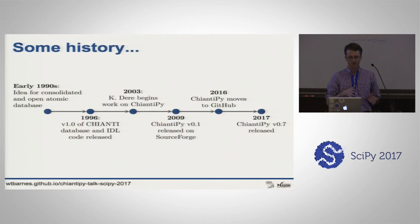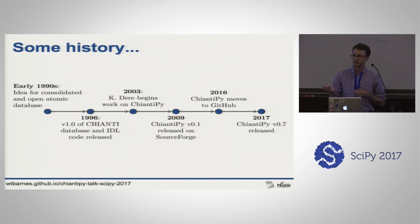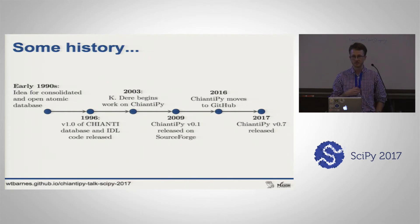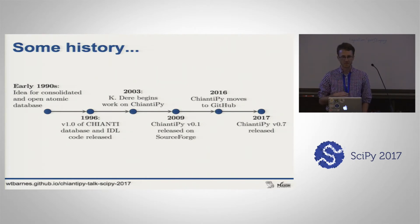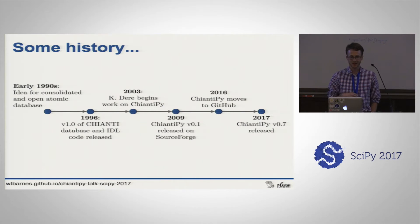In the early 1990s they started consolidating these databases. The first version was released in 1996 along with IDL code. Around 2003, Ken began working on ChiantiPy, experimenting with how to import the Chianti data with Python - he was using NumArray at the time, the predecessor to NumPy, very early days of scientific Python. Around 2009 he had version 0.1 released on SourceForge. Finally in 2016 it was moved to GitHub, which is about when I got involved, and this past February we had version 0.7 released.